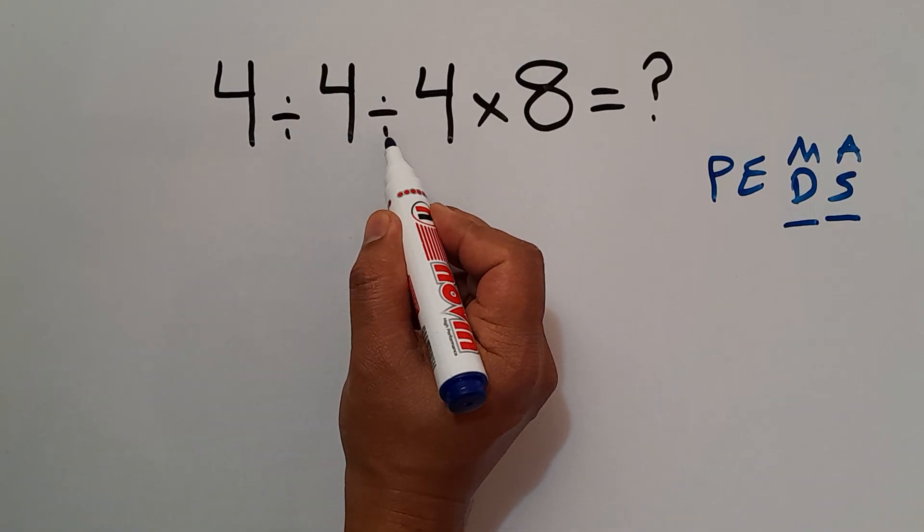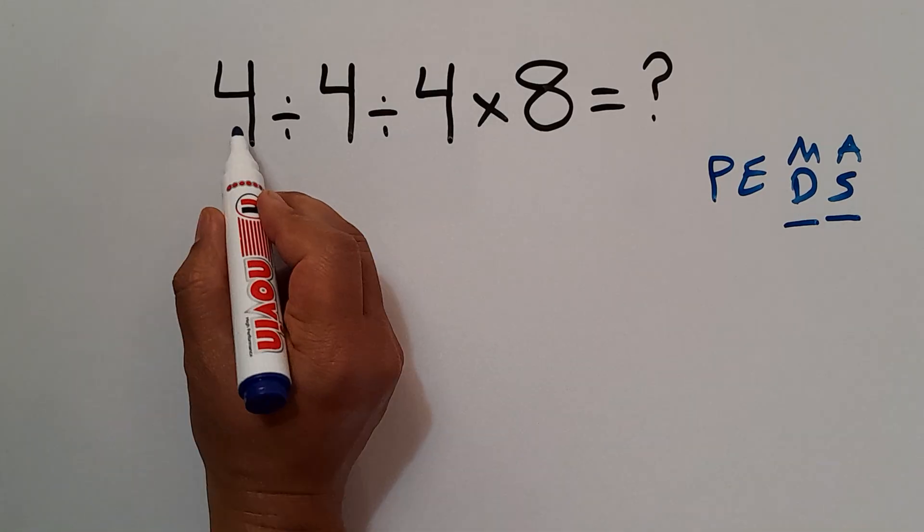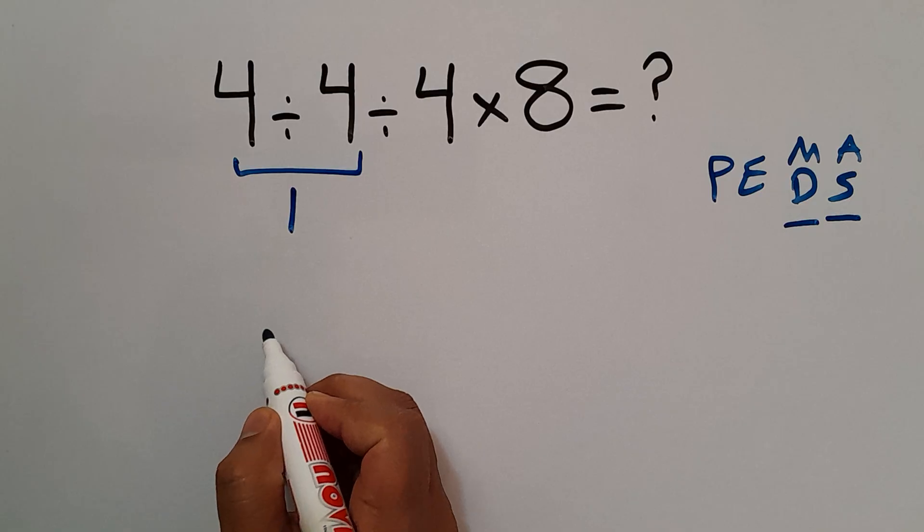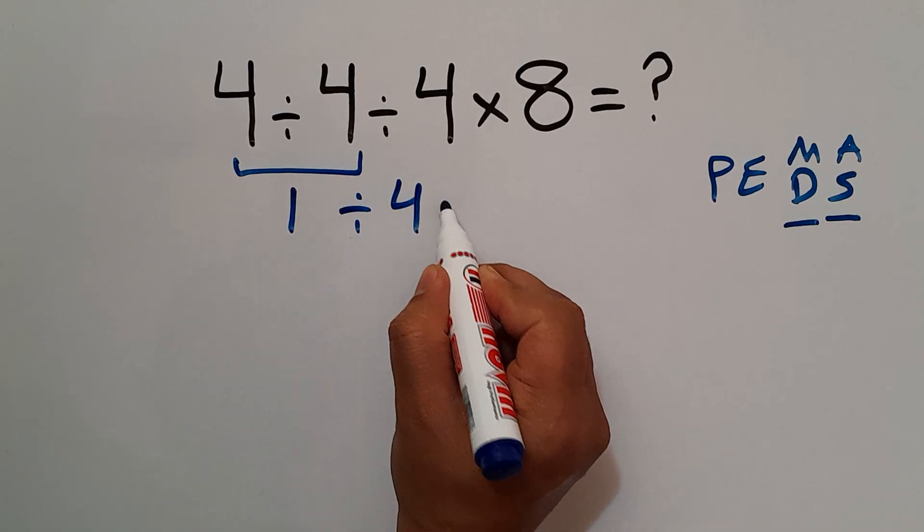4 divided by 4 is just 1, so we have 1 divided by 4 then times 8.